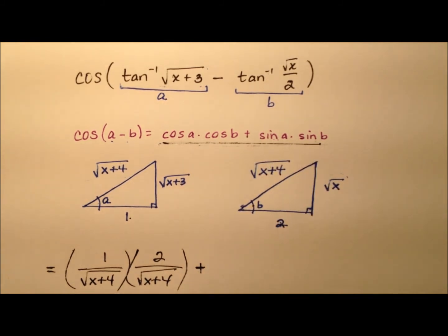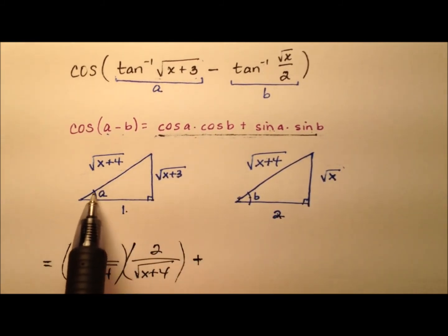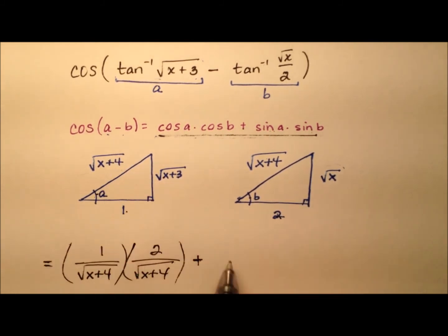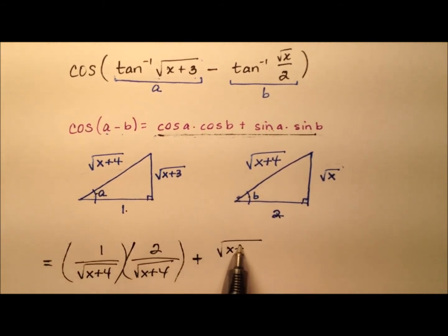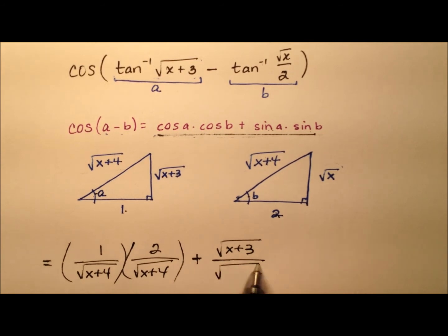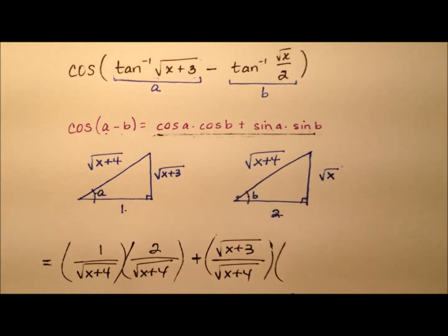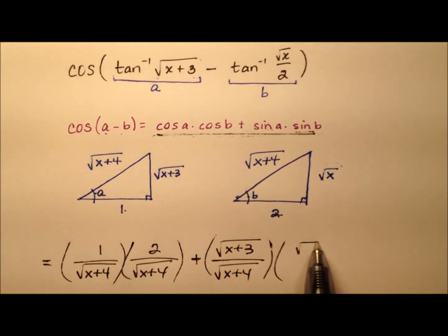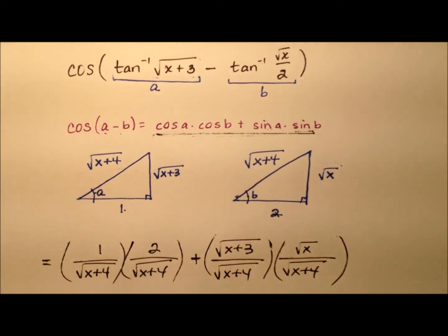So then we have the sine of A and the sine of B. So A, the sine is opposite over hypotenuse, so it'll be the square root of x plus 3 over the square root of x plus 4. And we're multiplying that by the sine of B, so opposite over hypotenuse again, the square root of x over the square root of x plus 4.